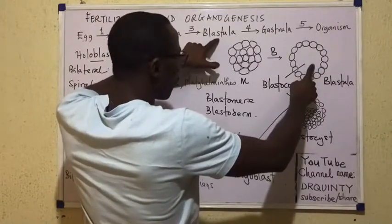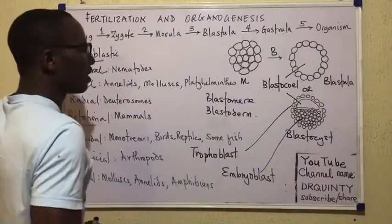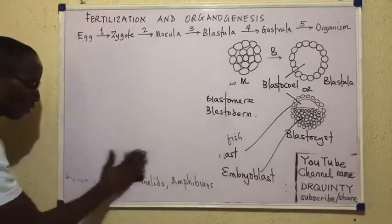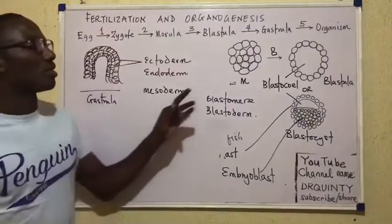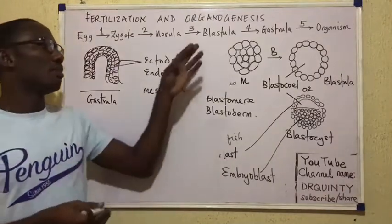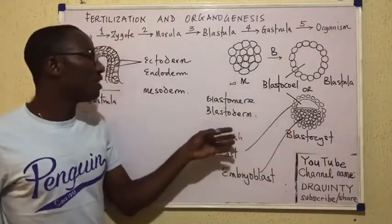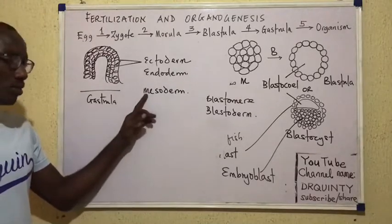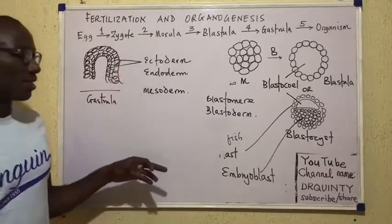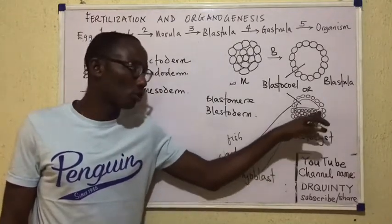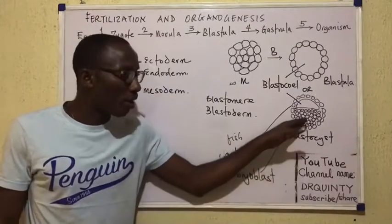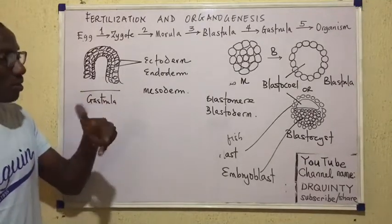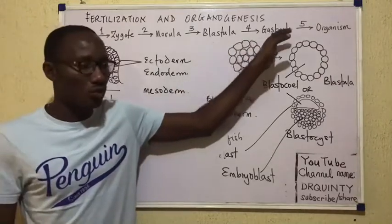So beyond blastulation, what comes? Gastrulation. Gastrulation is where the blastula or blastocyst differentiates — it involves the blastula, which is two cell masses, becoming modified to form the ectoderm, endoderm, and mesoderm. These three layers would usually come from the embryoblast portion of the blastocyst. Once those three layers — or in some diploblastic organisms, only two layers — have differentiated, we say gastrulation is complete.